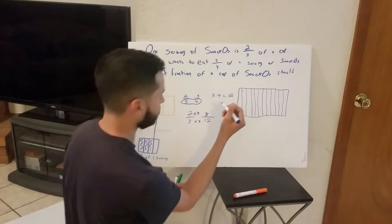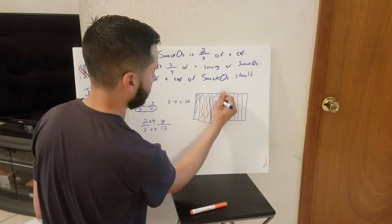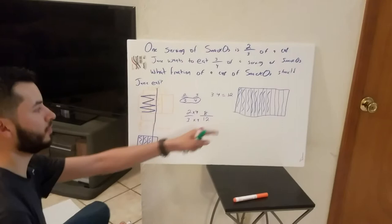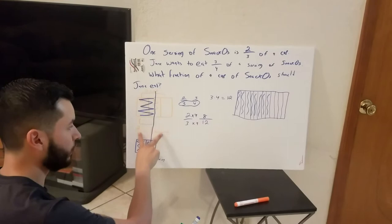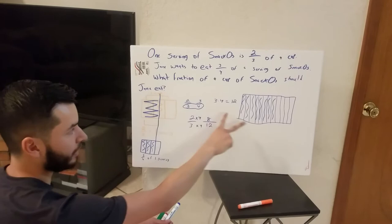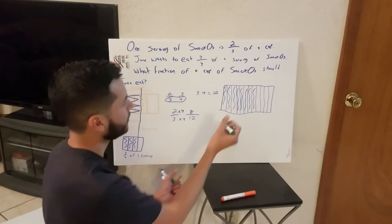Counting out 8 regions: 1, 2, 3, 4, 5, 6, 7, 8. So we know 8 twelfths is one serving. Let's go ahead and drop down the new whole, which is now in eights. Here it was in two, but here we have eight total regions shaded. So let's go ahead and drop this down.